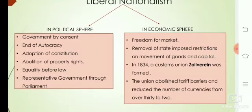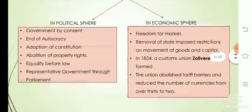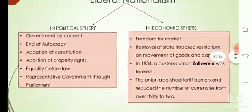In the economic sphere under liberal nationalism: freedom for the market, removal of state-imposed restrictions on movement of goods and capital. In 1834, a customs union called the Zollverein was formed. The union abolished tariff barriers and reduced the number of currencies from over 30 to 2.